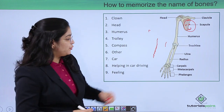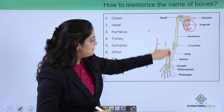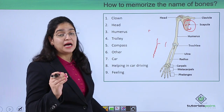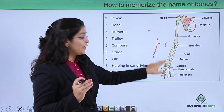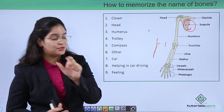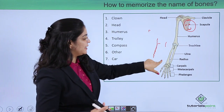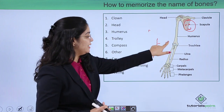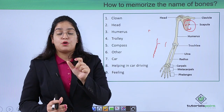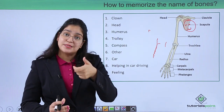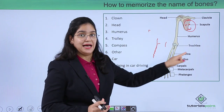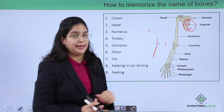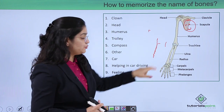The radius and ulna bones look like a compass. The role of a compass is to make a circle with a particular radius, so the largest bone is called the radius. The other smaller bone present here is the ulna.